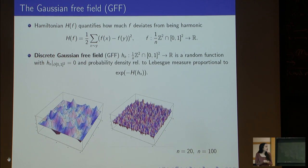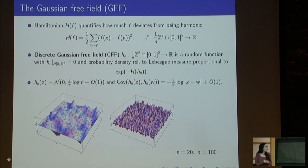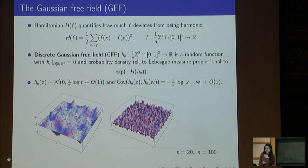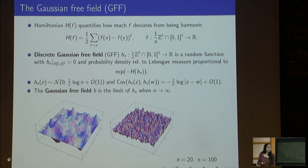From this definition one can deduce that at any fixed point of the graph, the value of the function is a normal random variable with mean zero and variance of order log n. There is also covariance between different points: the covariance between the values at z and w is of order the logarithm of the inverse distance between the two points.